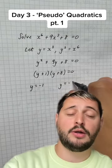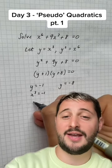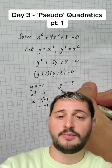That means y is either equal to minus 1 or y is equal to minus 8. If y is minus 1, well actually we're now saying that y is x cubed. So we replace the y with x cubed, find the cube root of minus 1, which is minus 1.